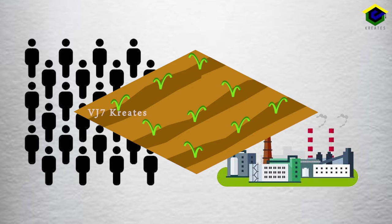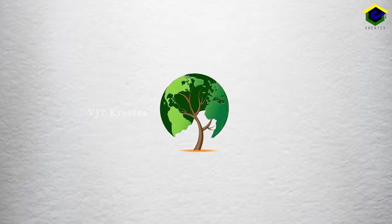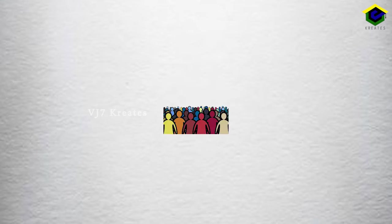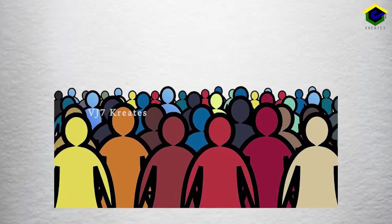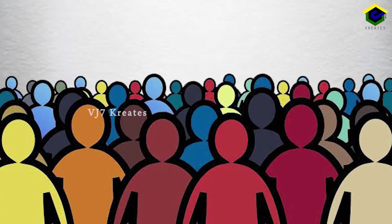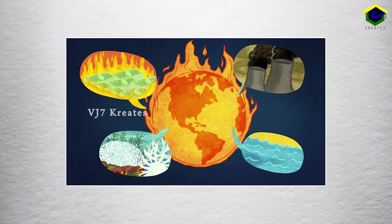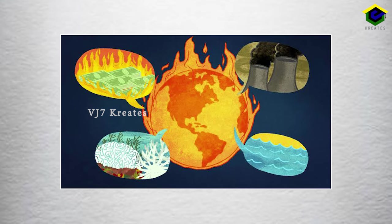On the other hand, areas such as high mountains, arid lands, thickly forested areas and some remote corners are very thinly populated, and some areas are even uninhabited. Uninhabited means a place without inhabitants. Terrain, climate, soil, water bodies, mineral resources, industries, transport and urbanization are the major factors which affect the distribution of population in our country.